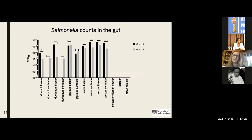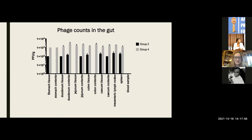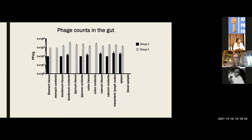The second thing we were curious about was: do phages amplify at the site of infection? We know phages are given in the feed and we were limited in the amount we could get in. Comparing animals given only phages versus those given both salmonella and phages, we can see that when the bacteria is there, the phages replicate — we see more of them. The phages appear effective in reducing salmonella numbers, also reducing shedding, and they're clearly amplifying at the site of infection. This gave us enthusiasm to try a larger trial.